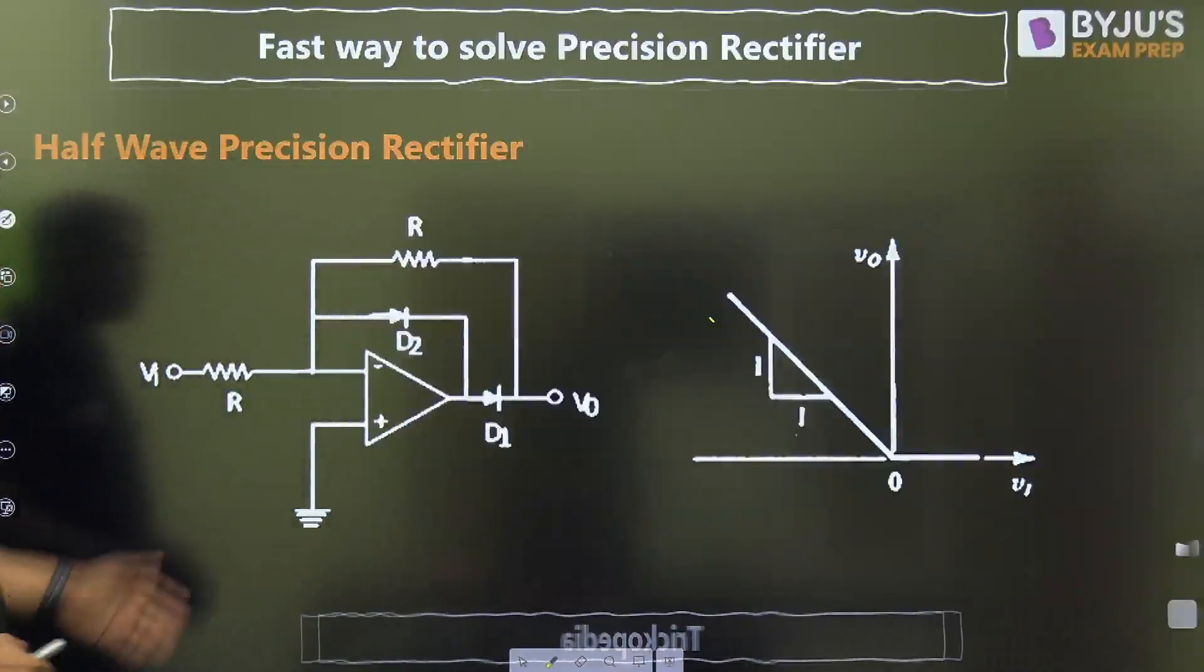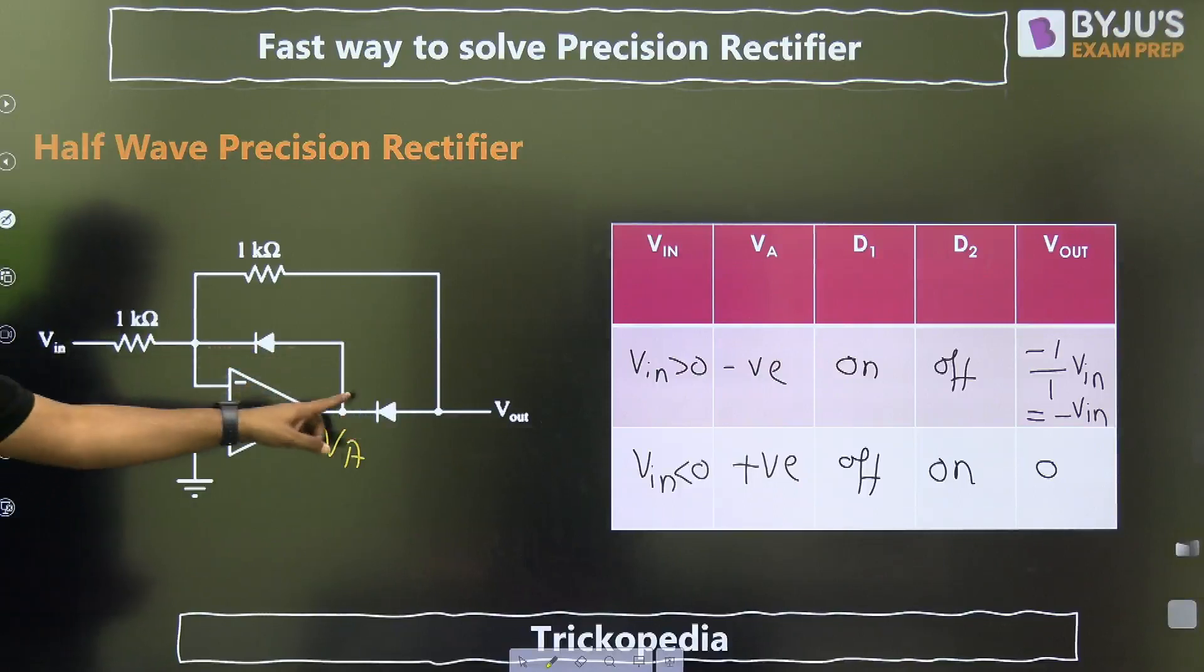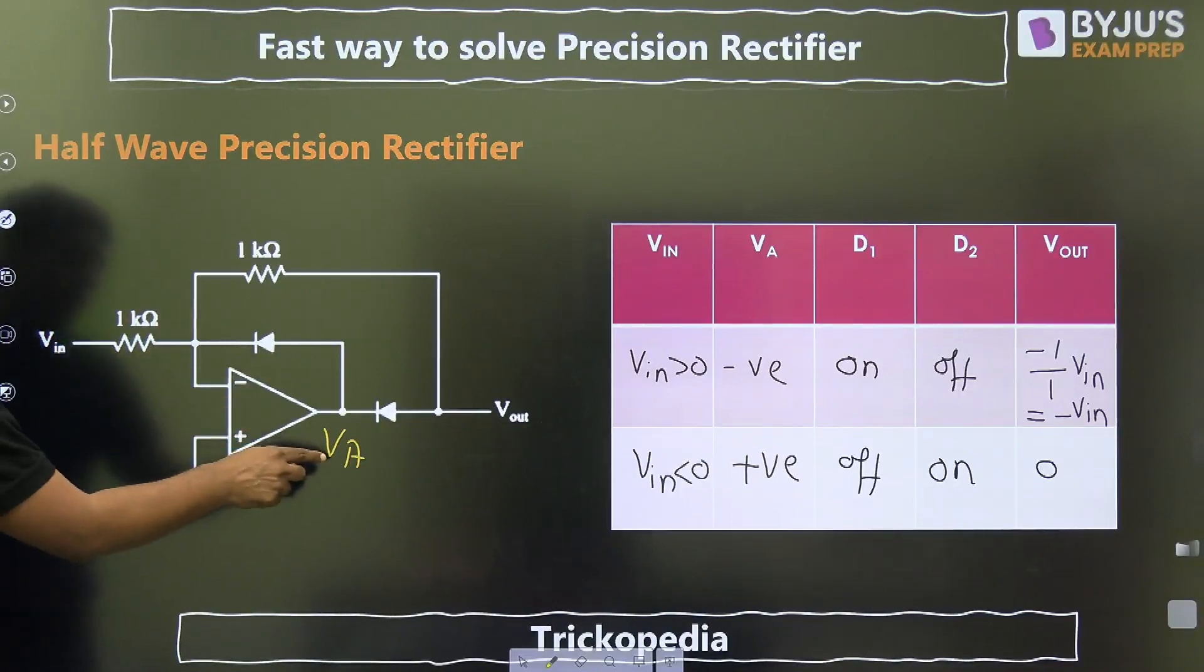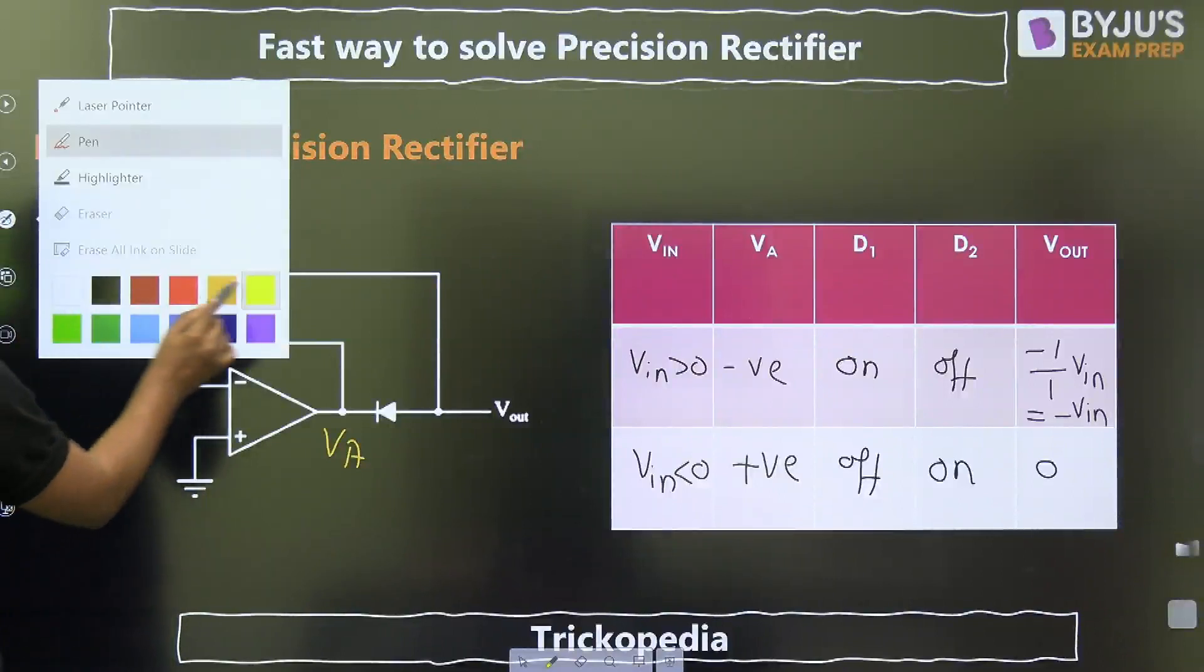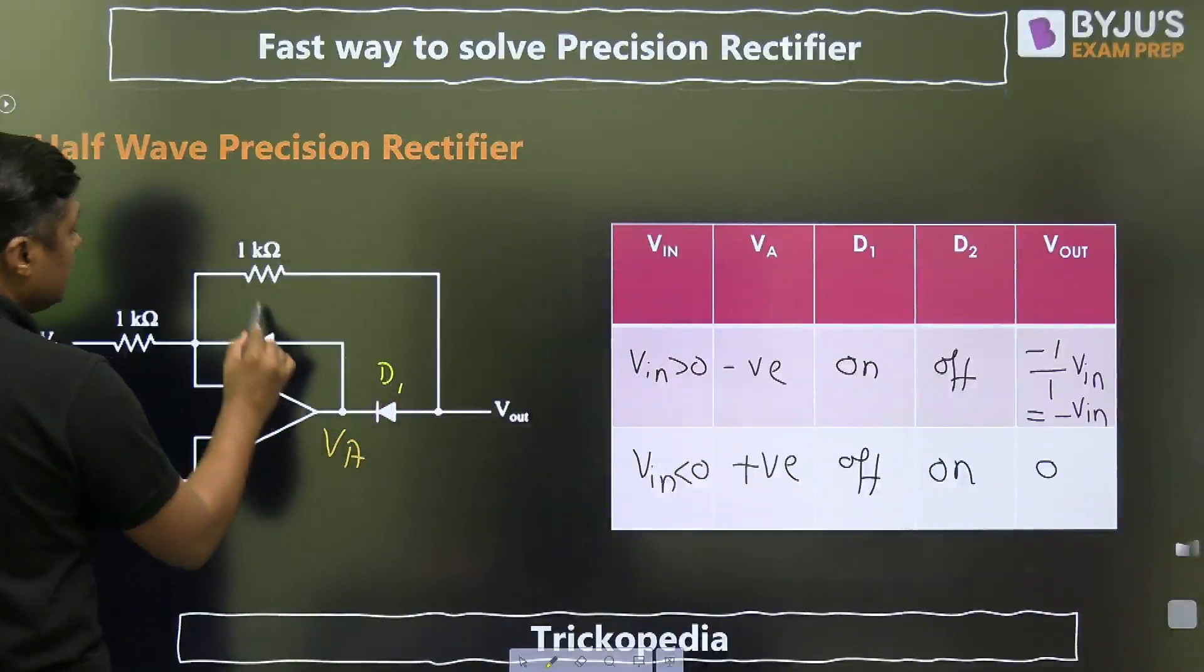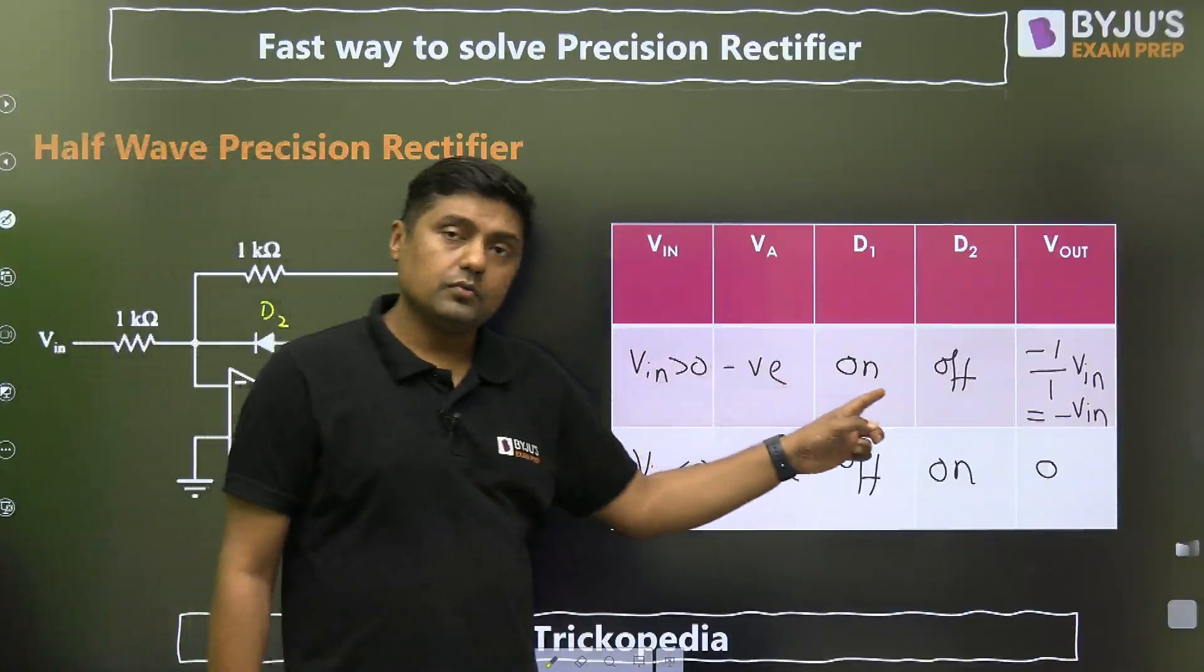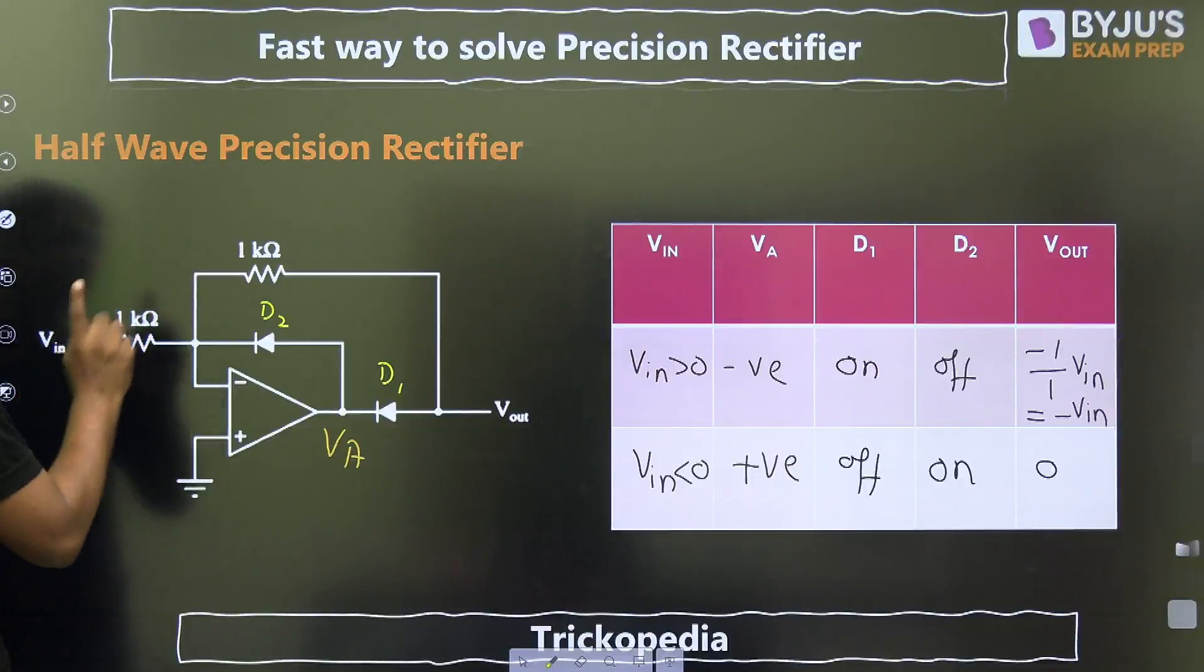Second diagram. Suppose we are changing the polarity of the diode, both the diodes. Now, when we are giving the positive value at this point, VA will become negative. Now, this diode D1 is on. Diode D2 is off. When D1 is on, what will be the output? Minus 1 by 1 into V in, that is minus V in.